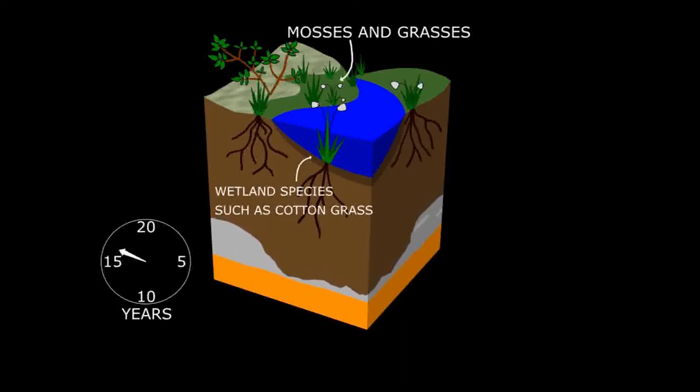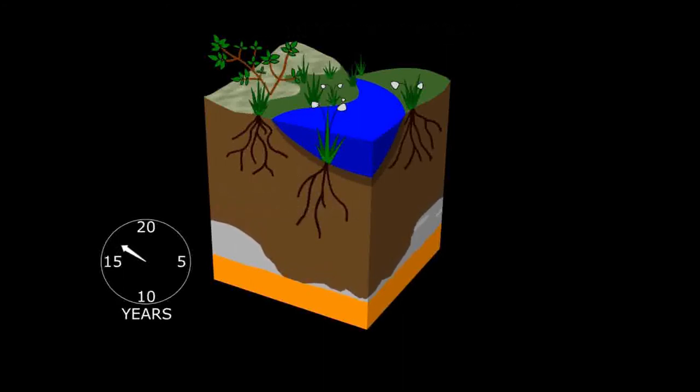As permafrost continues to thaw, its former continuous cover becomes broken and the permafrost is now called discontinuous as it only occurs in patches. Eventually, even these patches will thaw and there will be no permafrost in this area. In some areas of the arctic that recently had continuous permafrost, we now have discontinuous permafrost.